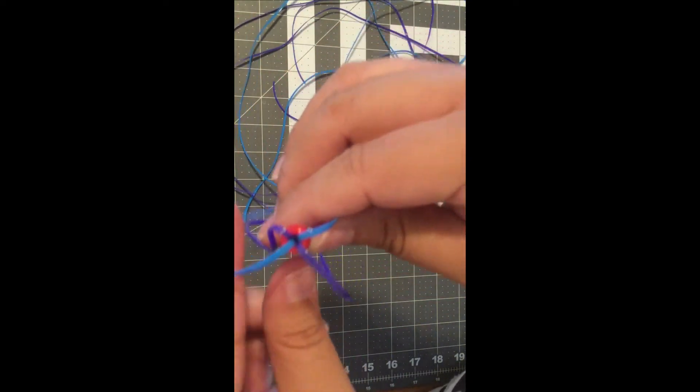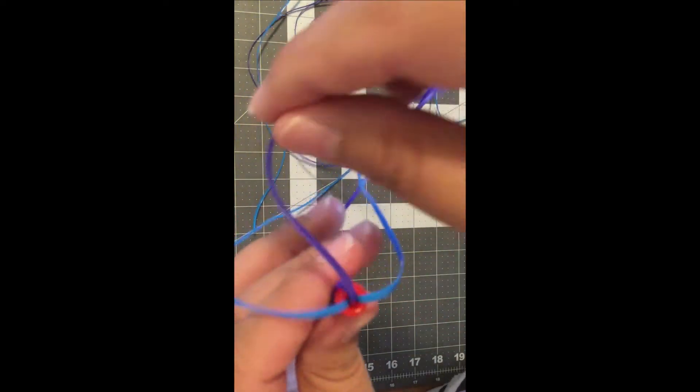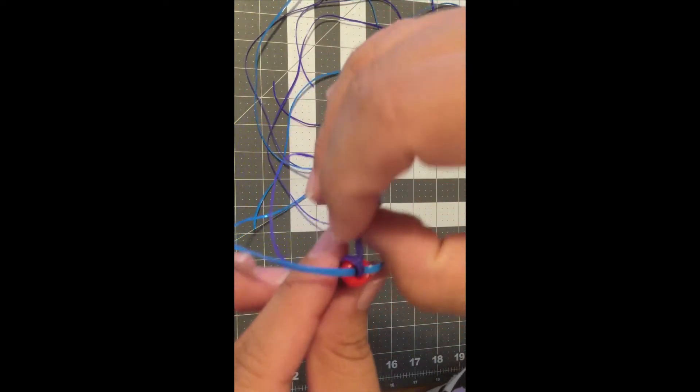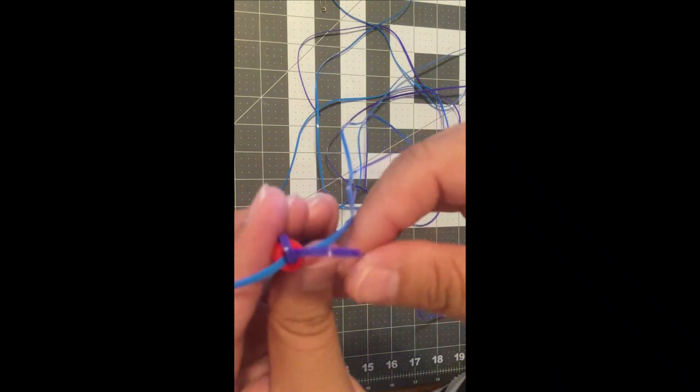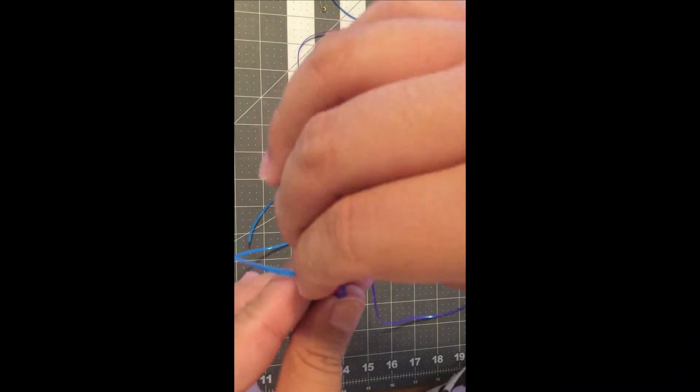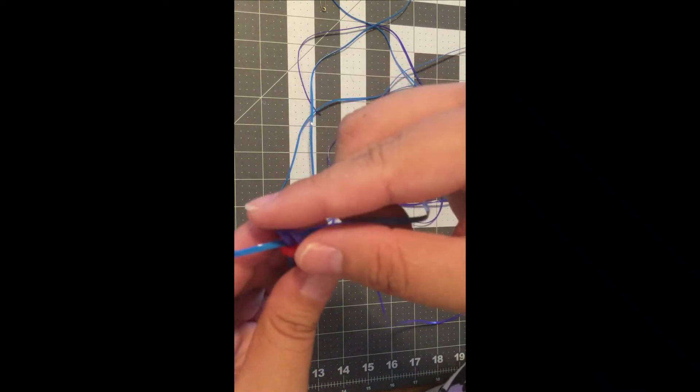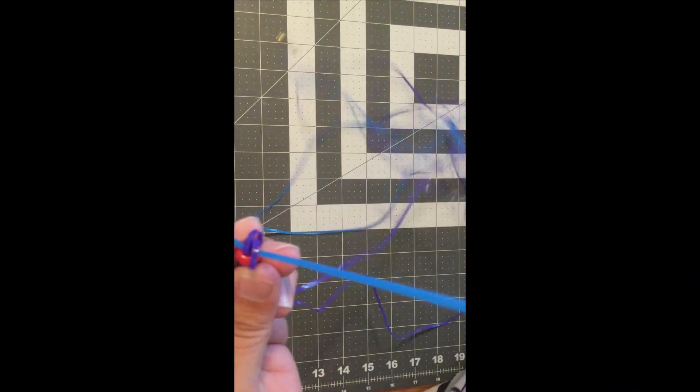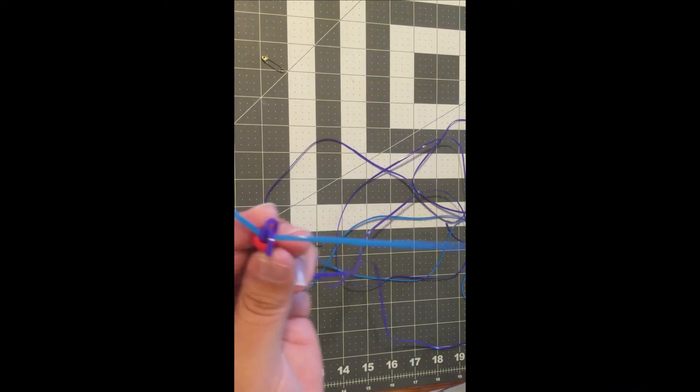Take one cord and make your loops. And with the other cord, go ahead and feed it through those loops.